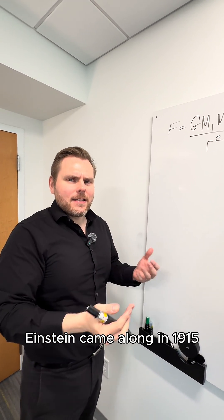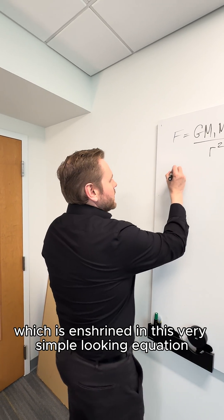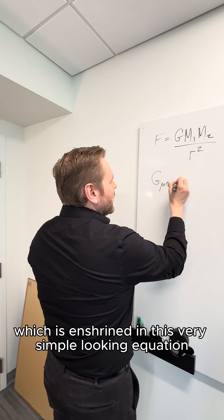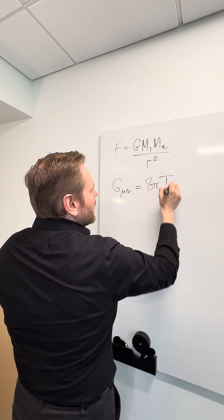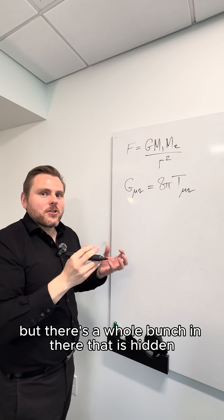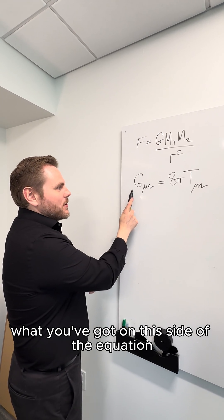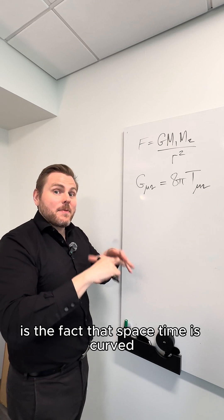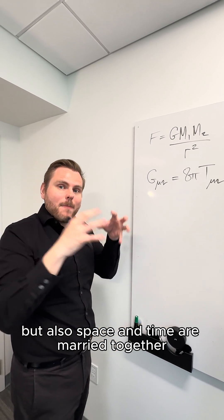Einstein came along in 1915 and came up with his general theory of relativity, which is enshrined in this very simple looking equation. But there's a whole bunch in there that is hidden. But essentially, what you've got on this side of the equation is the fact that spacetime is curved. It's not a flat object, but also space and time are married together.